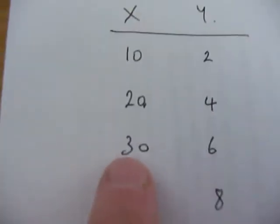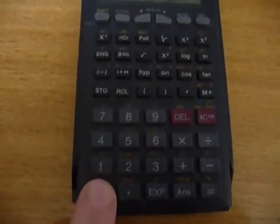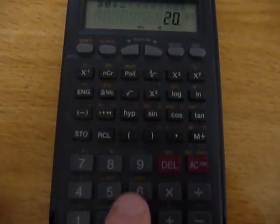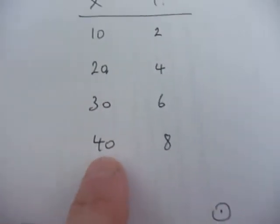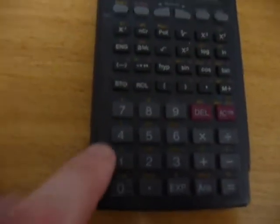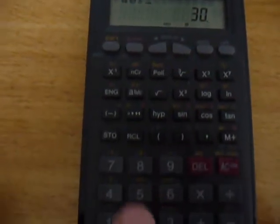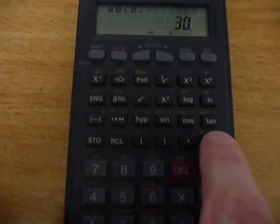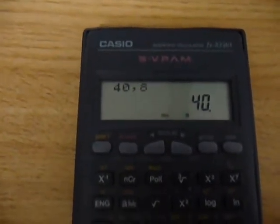The next value is 30 and 6. So we select 30 comma 6, data enter. And the final value is 40 for the x and 8 for the y. So 40 comma 8, data enter. So that's all four data points entered into the calculator now.